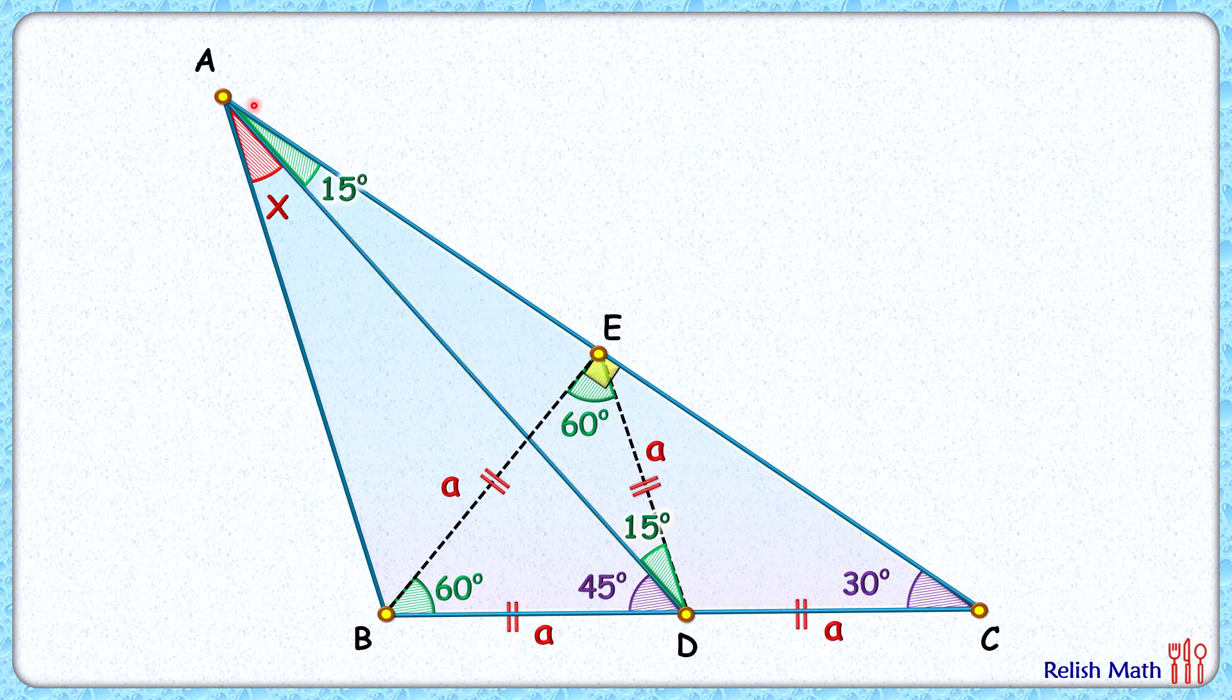Again, if you look at triangle AED, in this green triangle, two angles are 15 degrees each, so their opposite sides will be equal. ED length will be equal to AE length, so AE length will also be a centimeters.